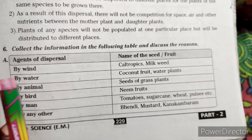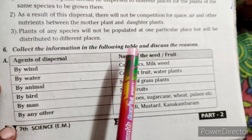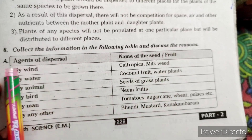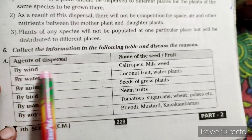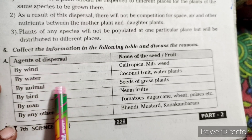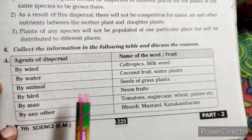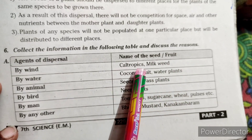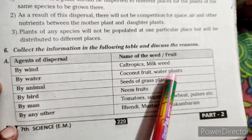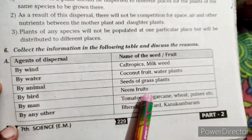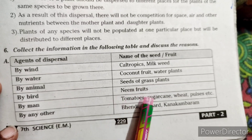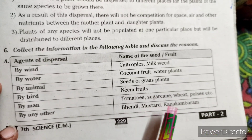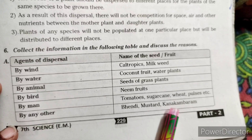Sixth question: Collect the information in the following table and discuss the reasons. Agents of dispersal include wind, water, animal, bird, man, and others. Names of seeds and fruits include calotropis, milkweed, coconut fruit, water plants, seeds of grass plants, neem fruits, tomatoes, sugarcane, wheat, pulses, bendi, mustard, and kanakambaram.